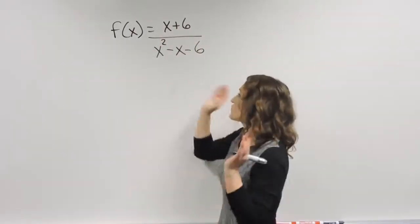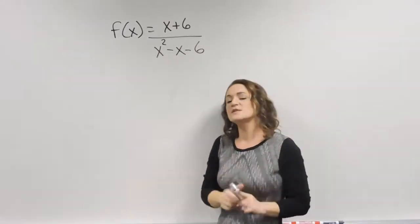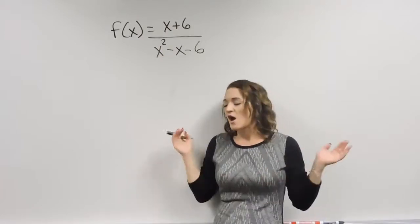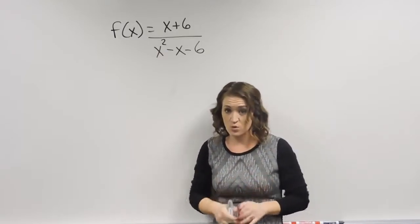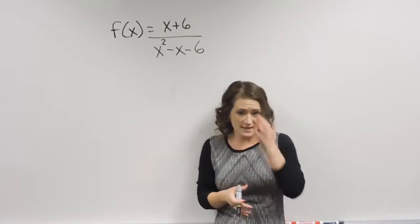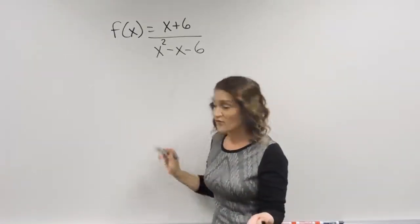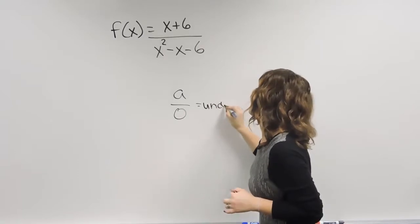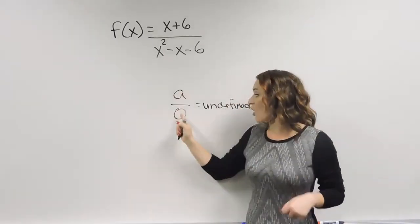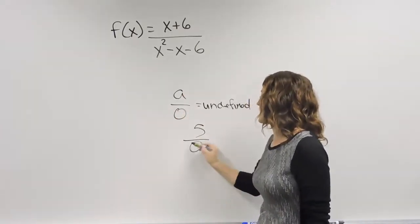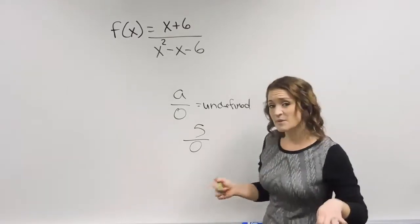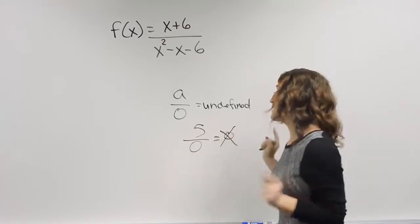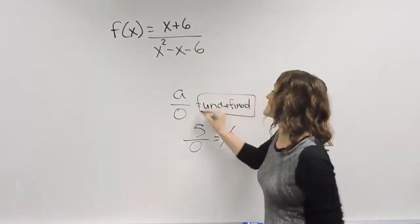Specifically talking about what is going to make rational expressions undefined. Rational expressions follow the exact same rules as regular fractions. A regular fraction is undefined when the denominator equals zero. Anything over zero is undefined. So you might have seen this with something like five divided by zero — the most common wrong answer is to say this is zero, but it's actually undefined.